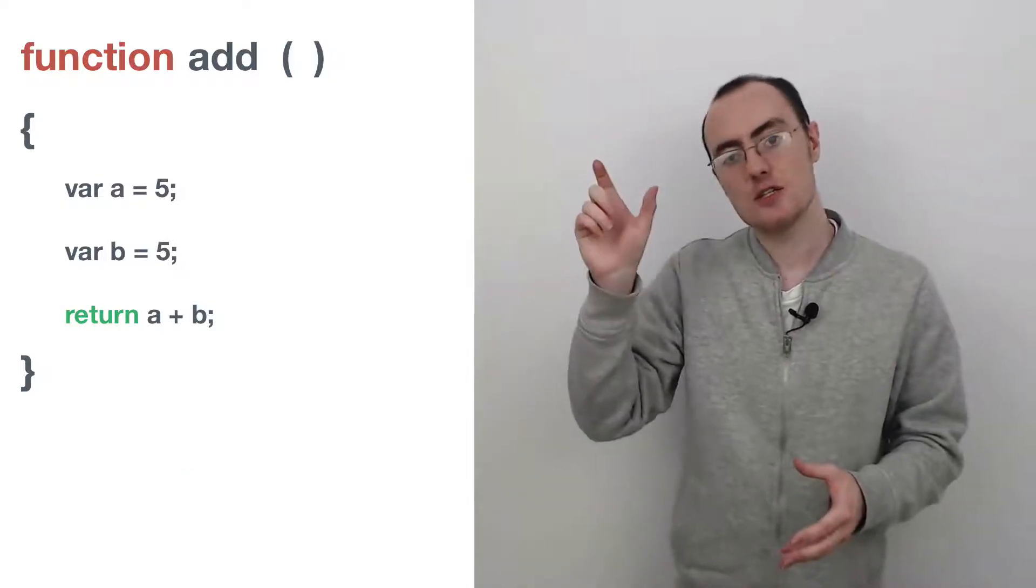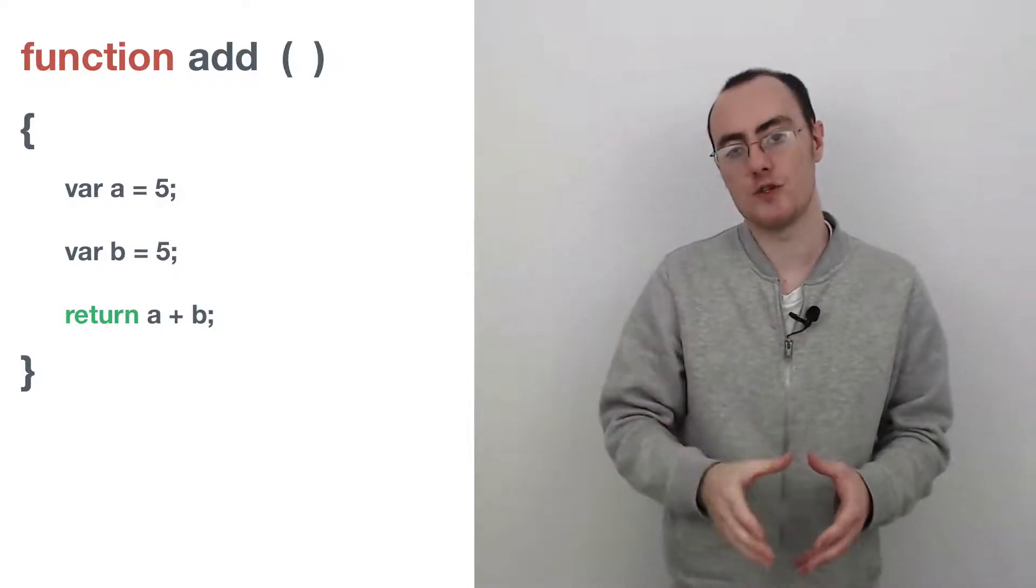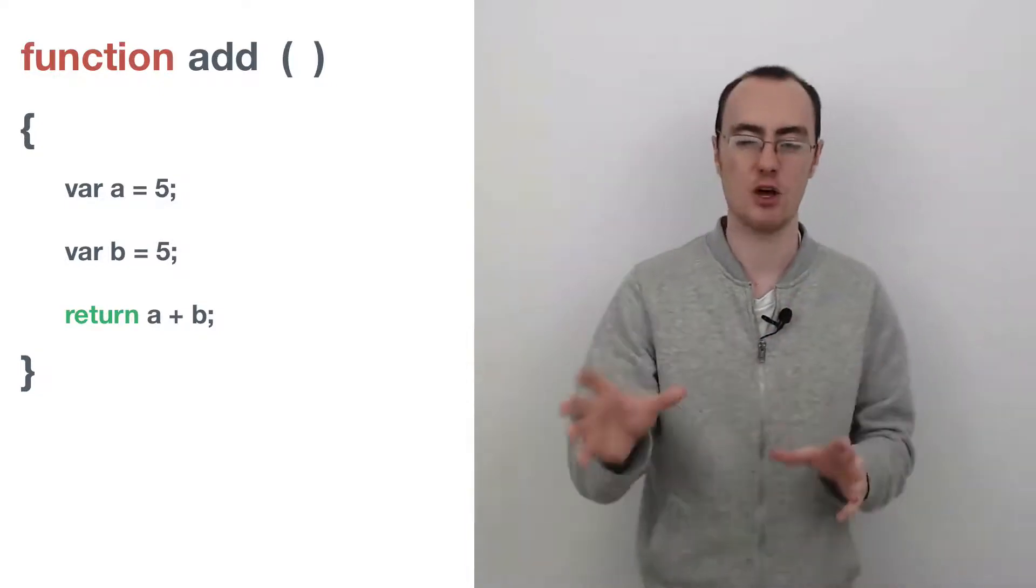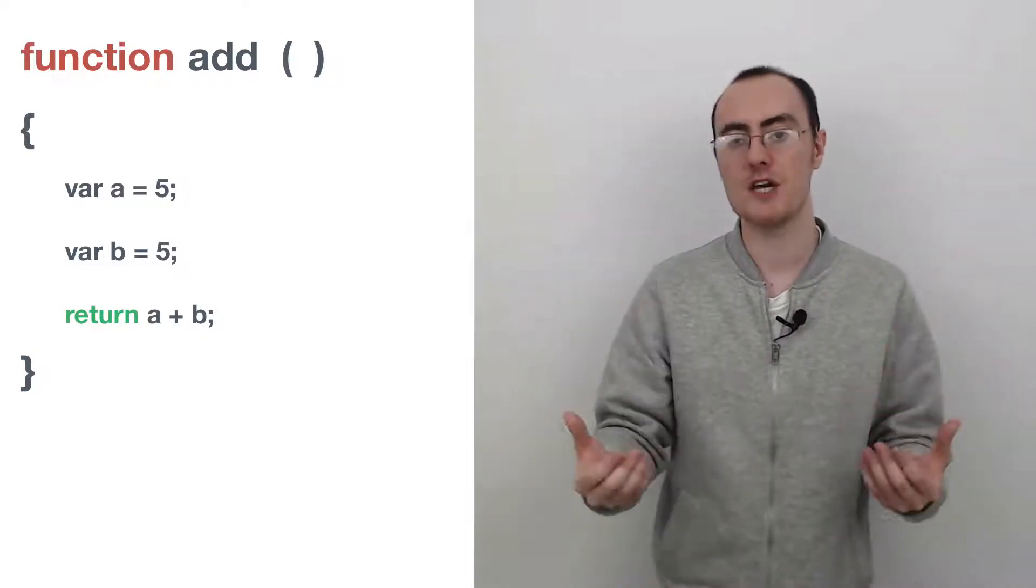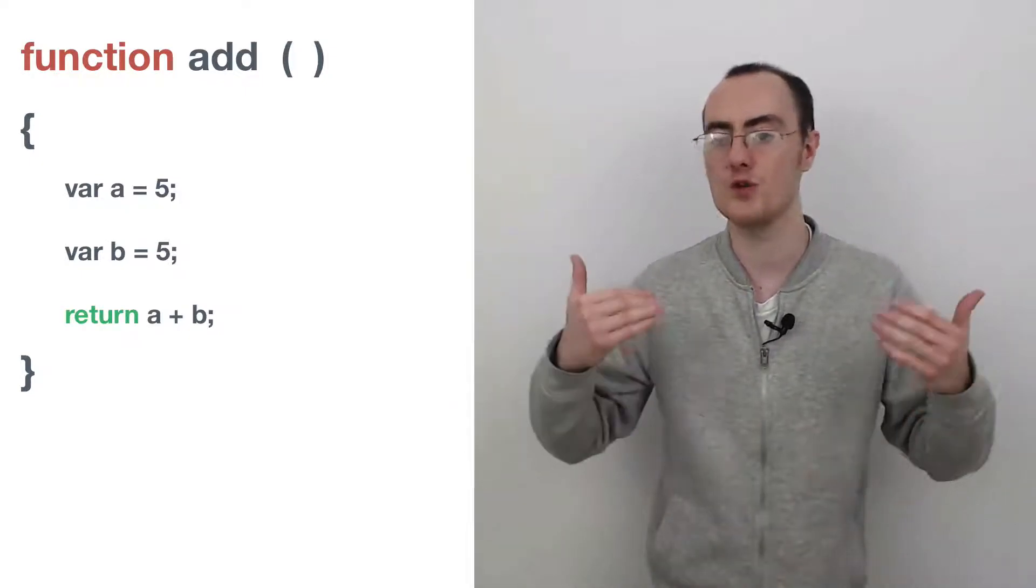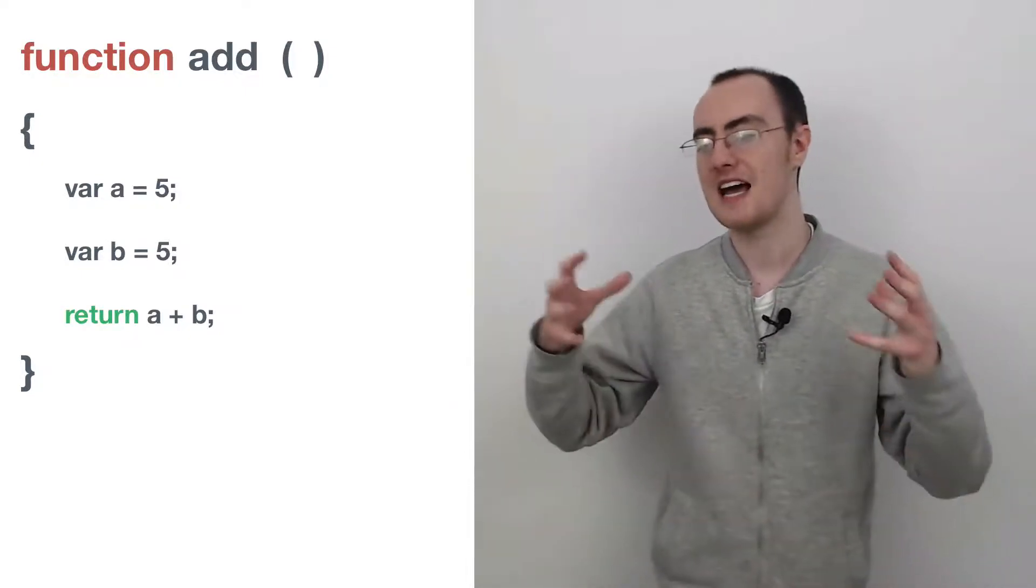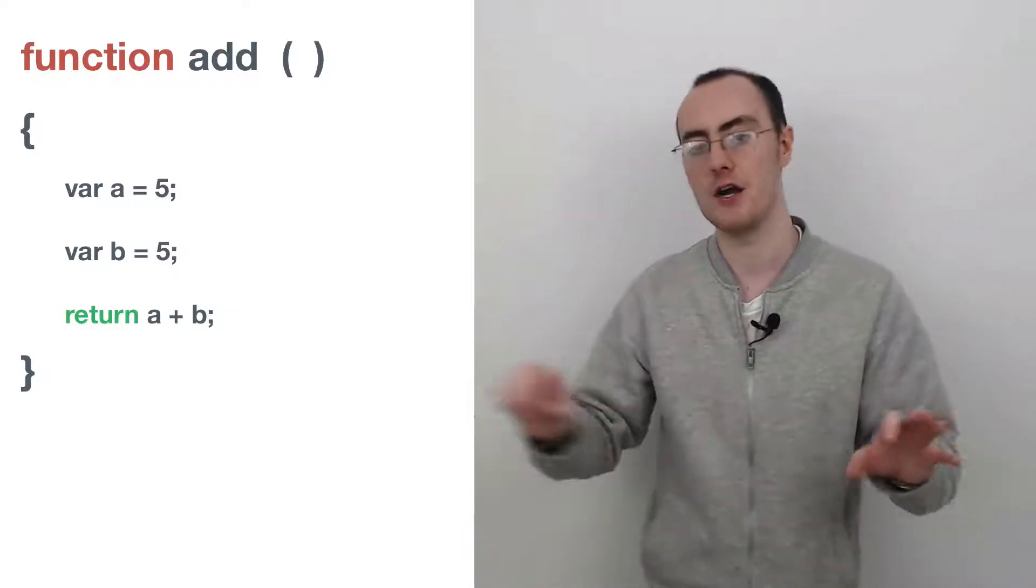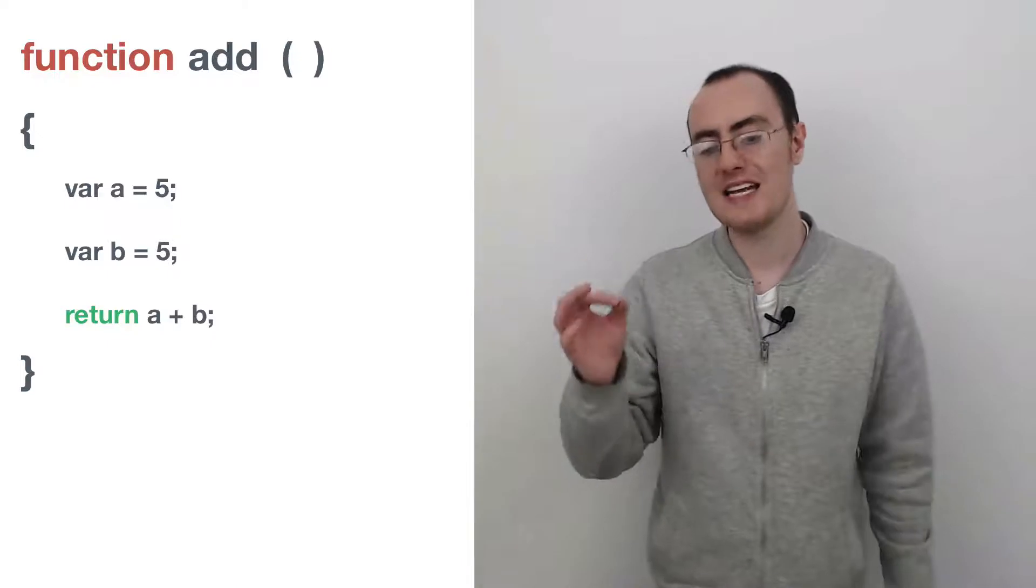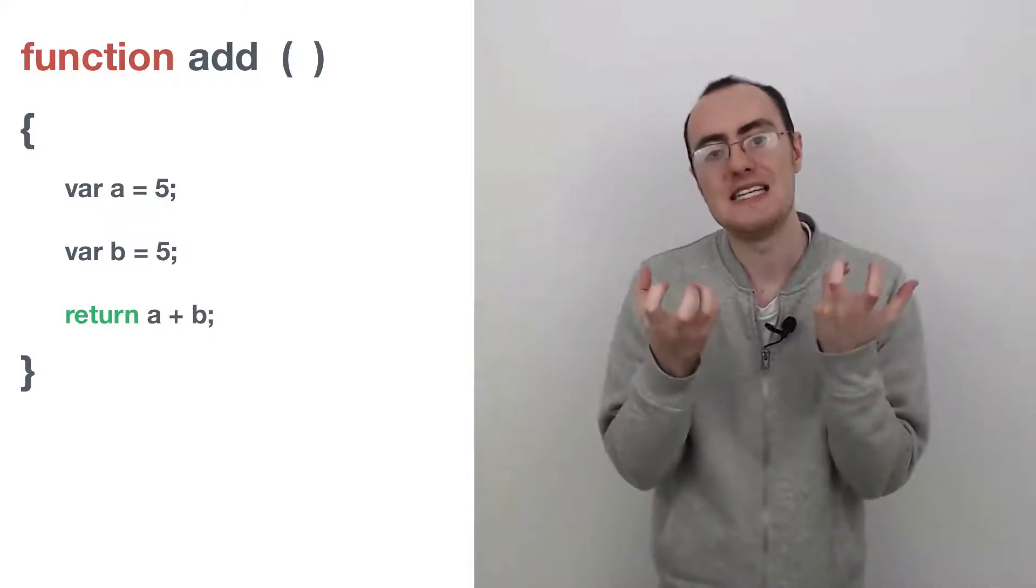Now this isn't really useful. This function that I have here, this add function, is not that useful. Because every time I invoke it, I know I'm going to get the same answer 10. So I might as well just create a variable that has the value 10 and use that variable throughout my program. So this is a waste of time. So what I need to do is I need to make my verb adaptable.